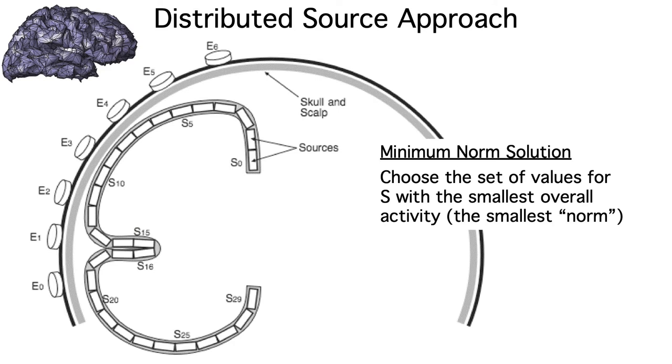The minimum norm approach solves the inverse problem by choosing a set of values at each source that minimizes the overall level of activity across the vector of sources, s. We quantify the overall level of activity by taking the norm of s, and we choose the solution with the smallest norm, that is, the minimum norm solution.